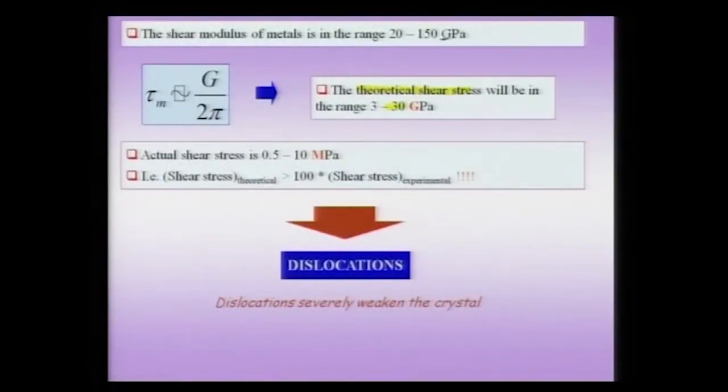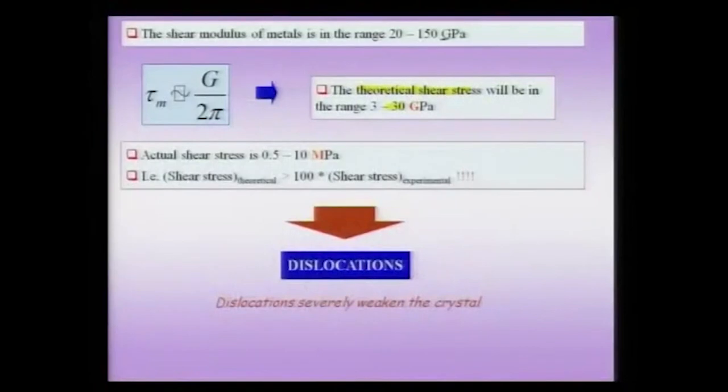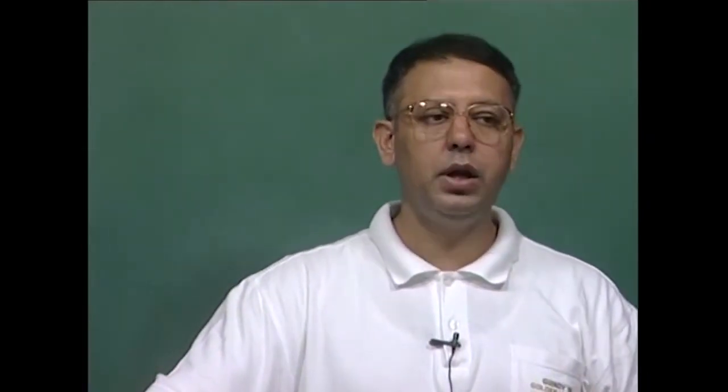When we actually measure the shear stress required to cause plastic deformation in materials such as aluminum, copper, or iron, the value comes out to be of the order of megapascals. So clearly, crystals are weaker — by at least 2 to 3 orders of magnitude — compared to the theoretical shear stress. The experimentally measured value was a great mystery for a long time, up until the early 1930s: why were crystals so weak compared to theoretical predictions?